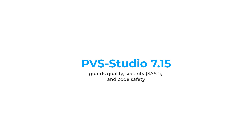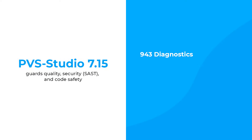What about language support? PVS Studio 7.15 contains over 900 different diagnostics. More than 400 of them check C++ projects. Over 200 are for C# projects. 106 are available for Java. Over 200 diagnostics address specific scenarios.